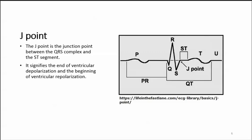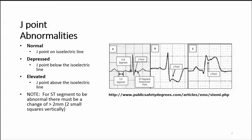The J point is the junction point between the QRS complex and the ST segment. It signifies the end of ventricular depolarization and the beginning of ventricular repolarization. Think of acute myocardial injury and infarction as a problem of repolarization — this will prompt you to look for anomalies on the right side of the QRS complex. J point abnormalities: Normal — the J point is on the isoelectric line.